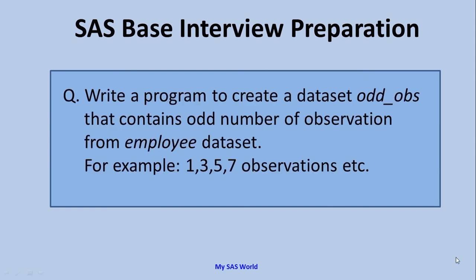Here is a question for you to solve. Write a program to create a data set that contains odd-numbered observations from the employee data set — for example, observations 1, 3, 5, 7, etc. To identify odd and even numbers, divide the number by two. If the remainder is zero, it is an even number; otherwise it is odd. Solve this question and mention in the comments whether you were able to solve it.